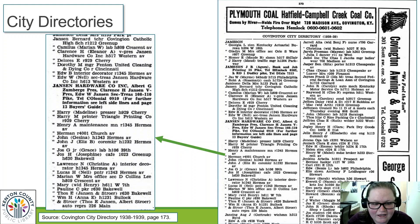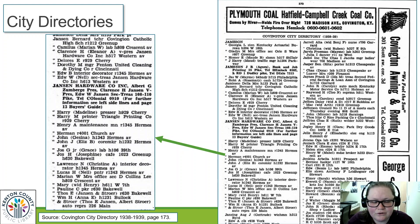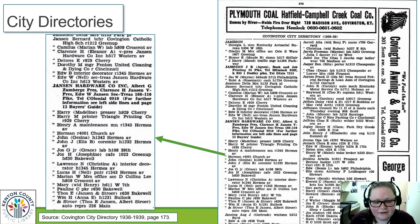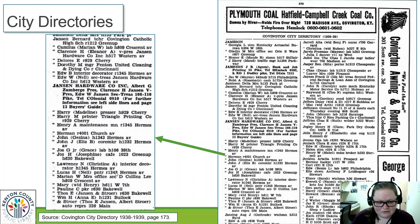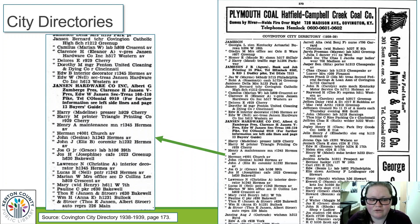Edward B has a residence at 1345 Hermes, as well as Henry A. You can make inferences about the relationships from these families by looking at city directories. A lot of these families are all living on Hermes Avenue, which is a good thing to investigate as a source of potential relatives. Edward lives at 1345 Hermes Avenue, and then John Jay and Eliza live at 1232 Hermes. There's also Lucas who lives at 1343 Hermes, which is probably right next door to Edward's. Make sure you write down all those names and potential relationships, because those might be sources of genealogical information, and you now have a whole family unit to research.